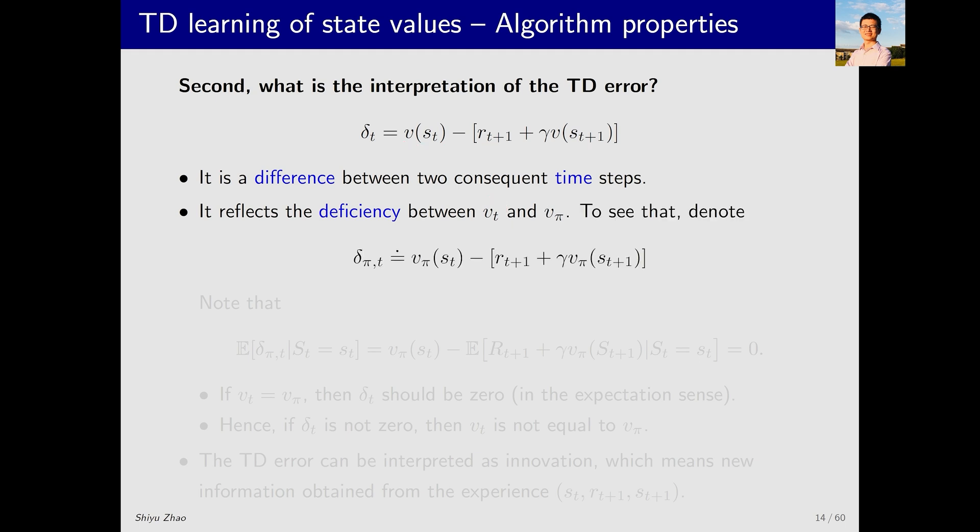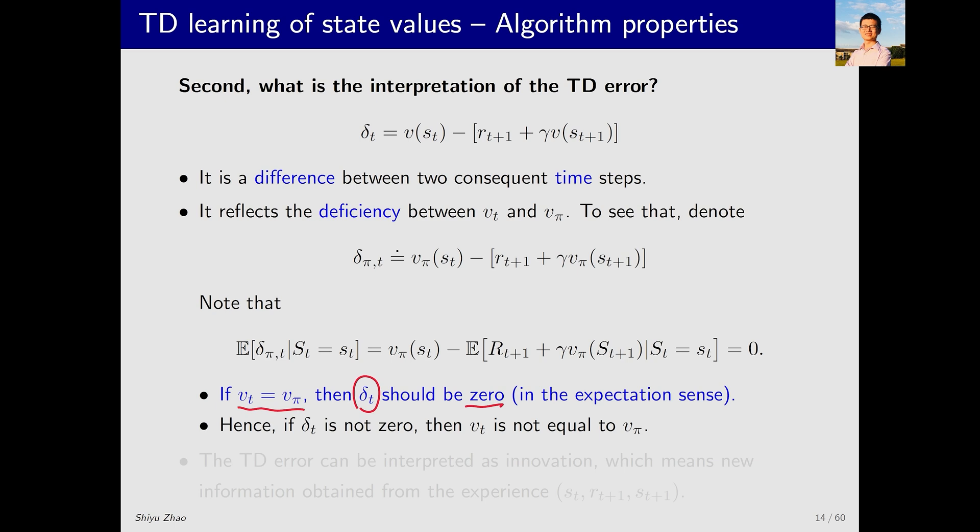Let's see why it is true. First, based on delta_t, we define delta_pi_t. What is delta_pi_t? It is obtained by replacing V with V_pi in the equation. Why? Because we ultimately want V to converge to V_pi. So now I replace V with V_pi and see what happens. I take the expectation of delta_pi_t and it equals V_pi(s_t) minus E[r_{t+1} + gamma*V_pi(s_{t+1})]. I believe everyone is familiar with this. This is actually equal to zero. Why? At time t, the state value of state s_t is equal to the expectation of the immediate reward plus the value of V_pi at the next state. From this equation, we know that when V_t equals V_pi, delta_t becomes delta_pi_t and delta_t should be zero, of course, in the sense of expectation. Conversely, if delta_t is not zero, it indicates that there is still a gap between V_t and V_pi. So delta_t can illustrate the inconsistency between V_t and V_pi.